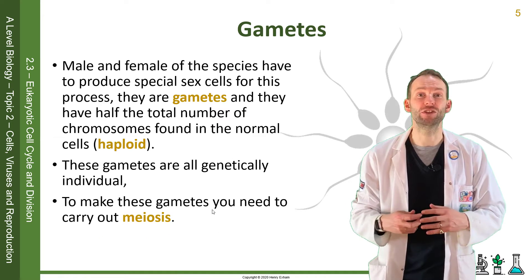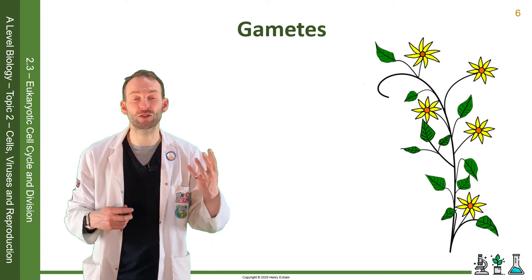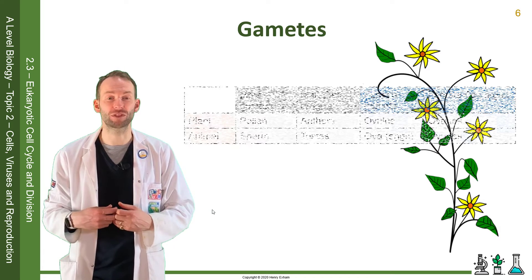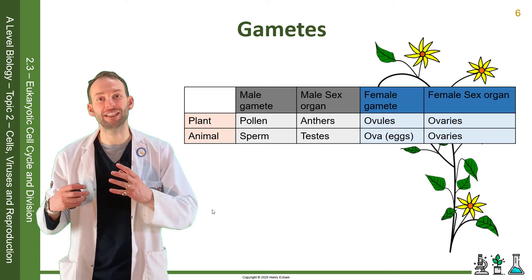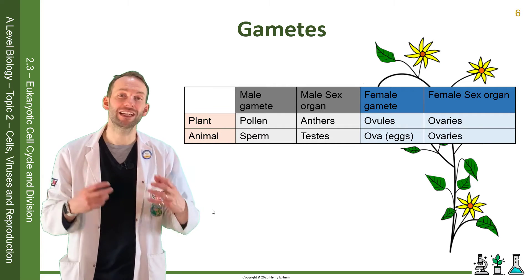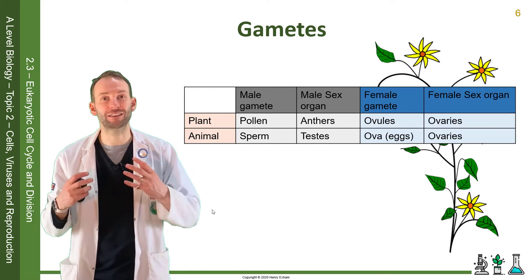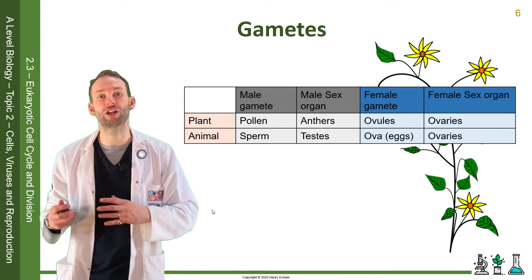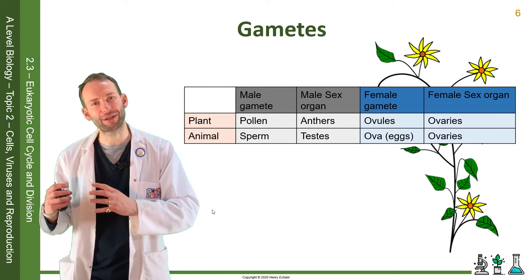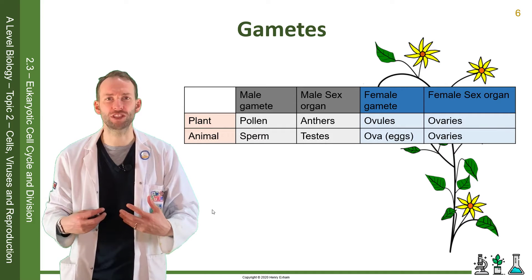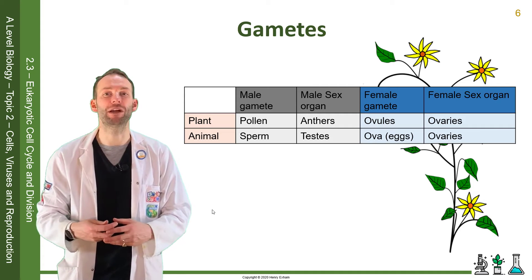To make these gametes, we need to do the type of cell division called meiosis. Gametes are produced in the sex organs of plants and animals. In plants, the male sex organs are the anthers and they produce pollen, and the female sex organs are the ovaries and they produce ova in the ovules. In animals, it is the testes in the male producing the sperm, and ovaries in the female producing the ova — the eggs. Male gametes tend to be produced in larger numbers and are more mobile; they tend to do the traveling to get to the female gametes.